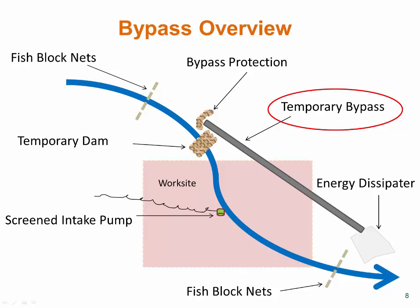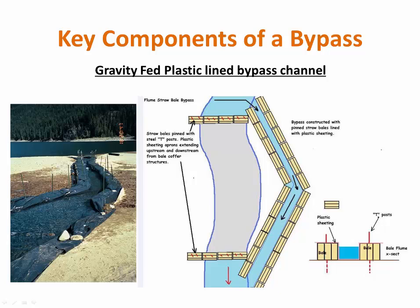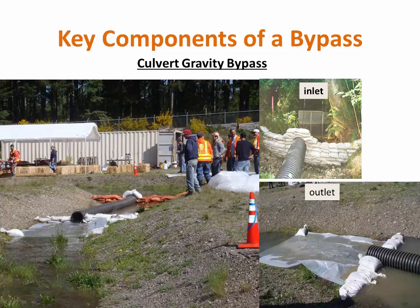A gravity fed bypass channel is constructed out of plastic sheeting and straw bales or sandbags along the sides. This method creates a temporary channel around the work area, and the plastic prevents scouring and turbidity.